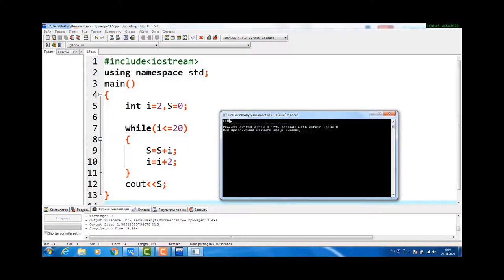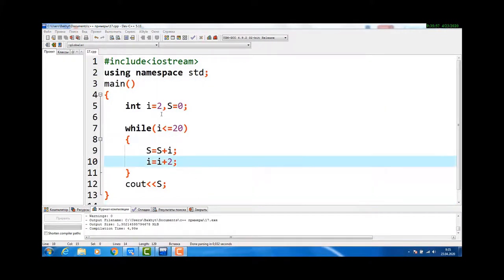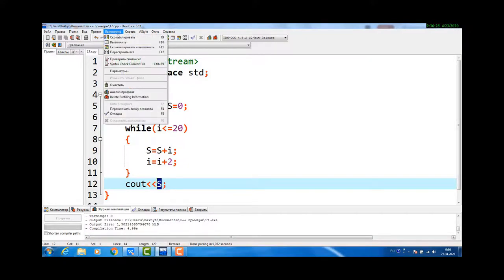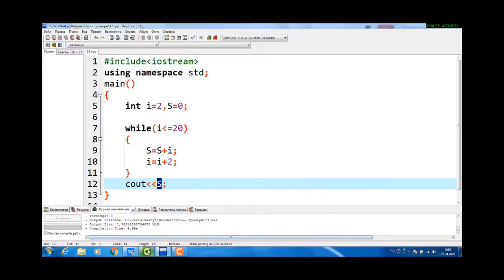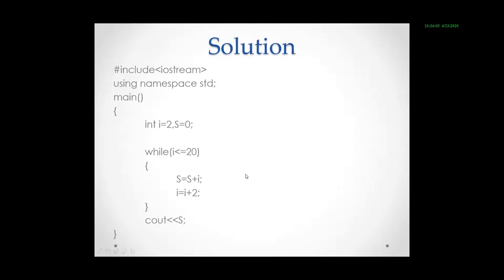Now let's run this. So if you get the same result, that means your program is correct. Now let's try to understand what's happening in this code. Here all even numbers starting from 2 up to 20, we are adding them to s and then displaying the result. And we get 110. So let's continue.